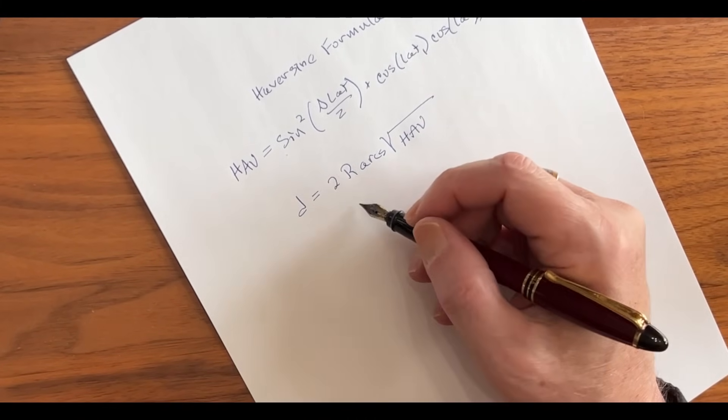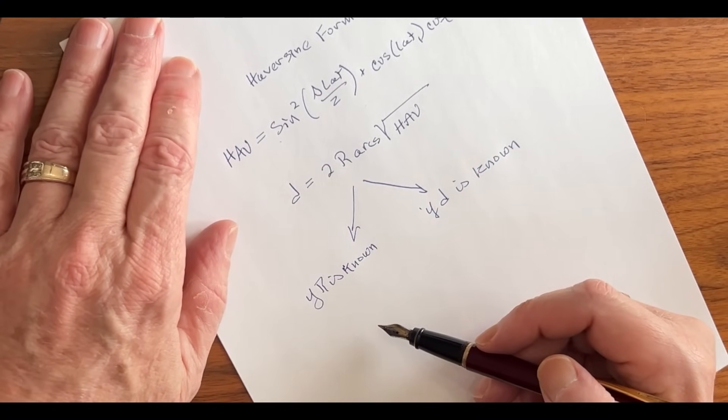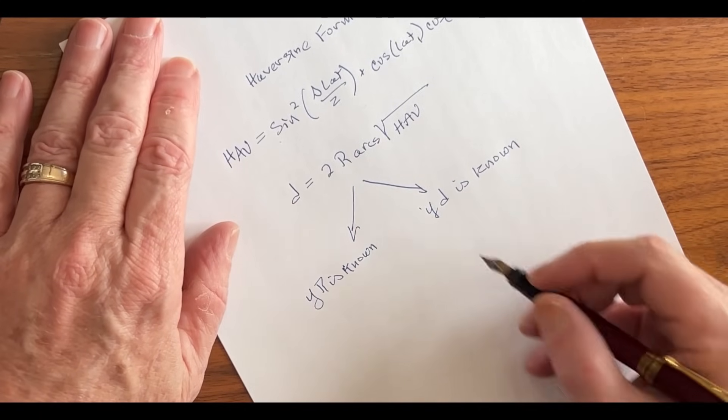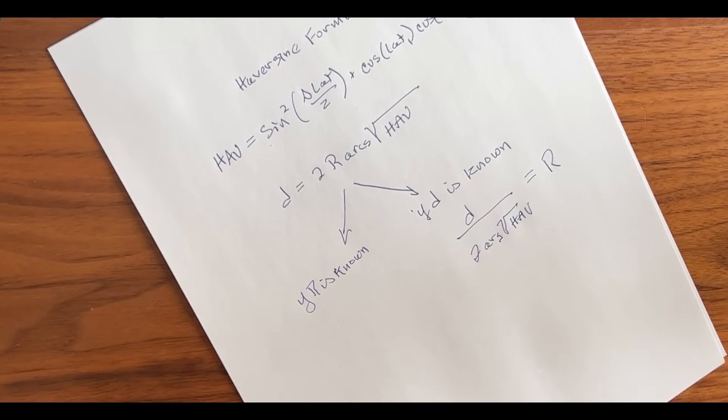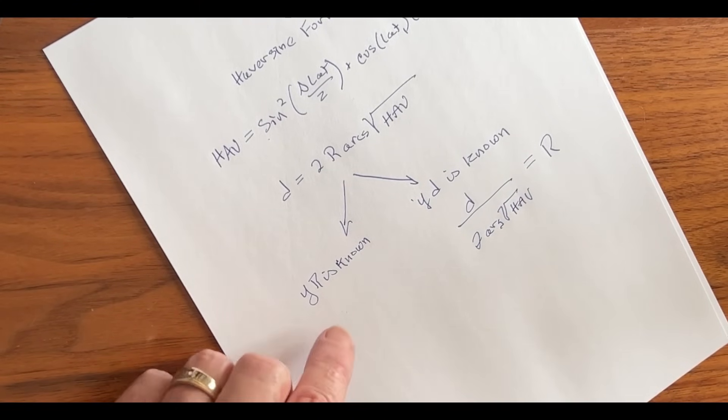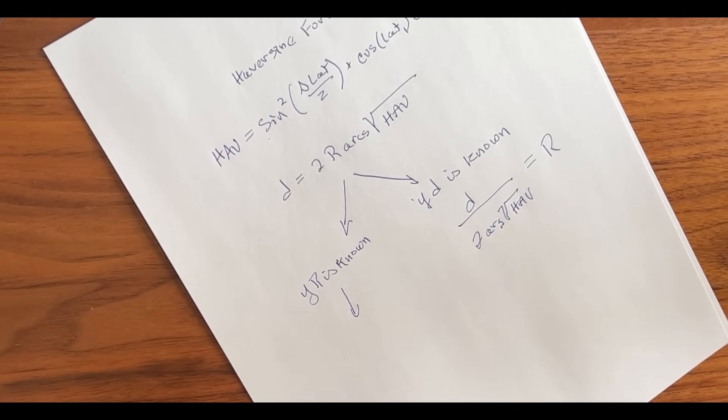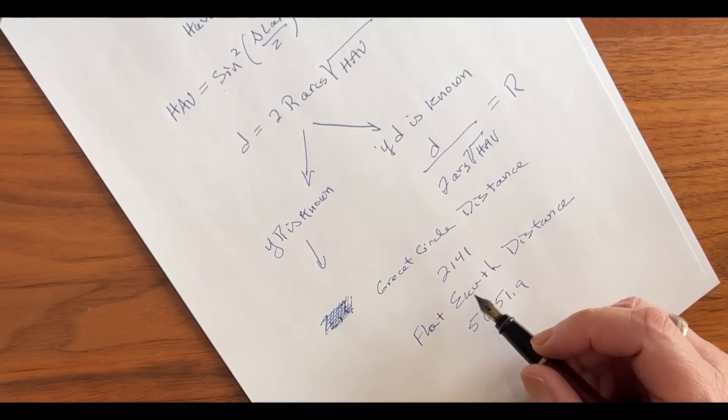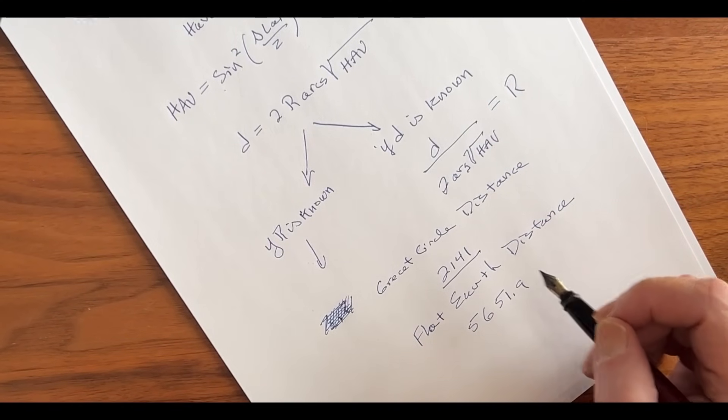To get the distance between the two points, you take 2 times the radius of the earth times the arcsine of the square root of the Haversine. Now if the radius of the earth is known, we just solve for the distance between the two. If the distance is known, we can actually rearrange this. That's right, if we know the length of these cables, we can calculate the radius of the earth directly. But we've already determined the radius of the earth by other means, so we're going to calculate what the distance should be on a spherical earth between these two points. When you bring all this math together, we find that the great circle distance should be 2,141 kilometers.